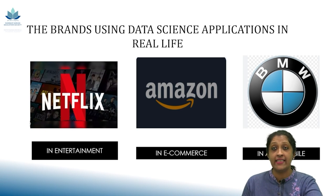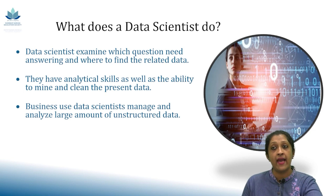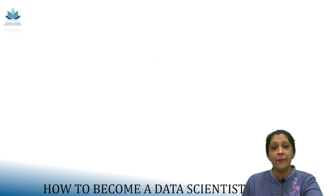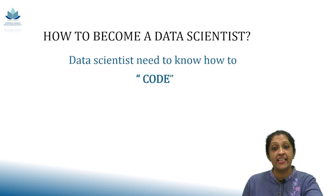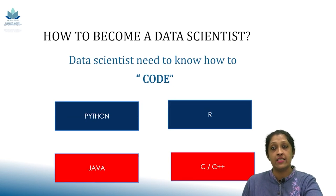So, what does a data scientist do? Data scientists examine which questions need answering and where to find the related data. They have analytical skills as well as the ability to mine and clean the present data. Businesses use data scientists to manage and analyze large amounts of unstructured data. To become a data scientist, one needs to know how to code in high-level languages like Python and R, and in low-level languages like Java, C, and C++.